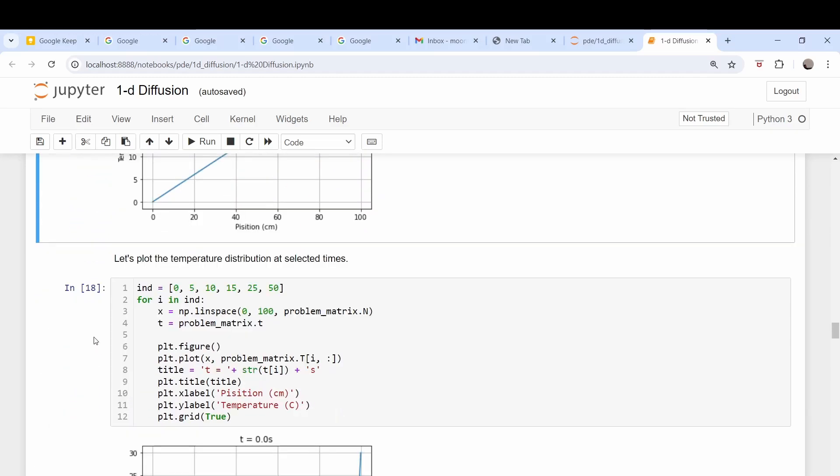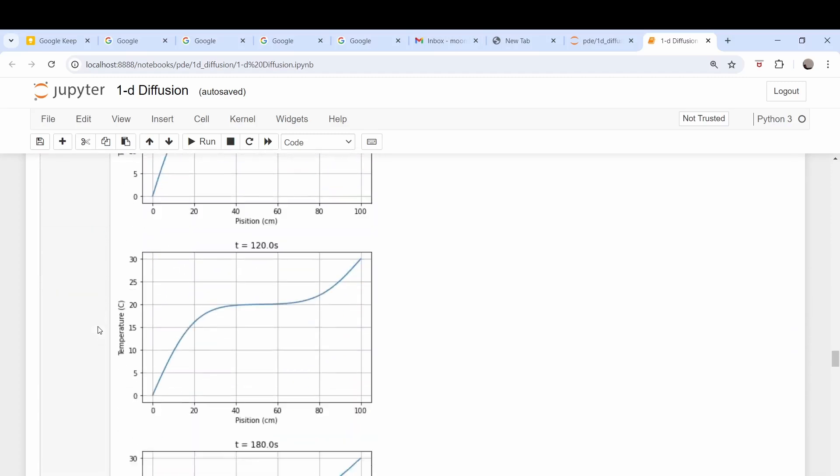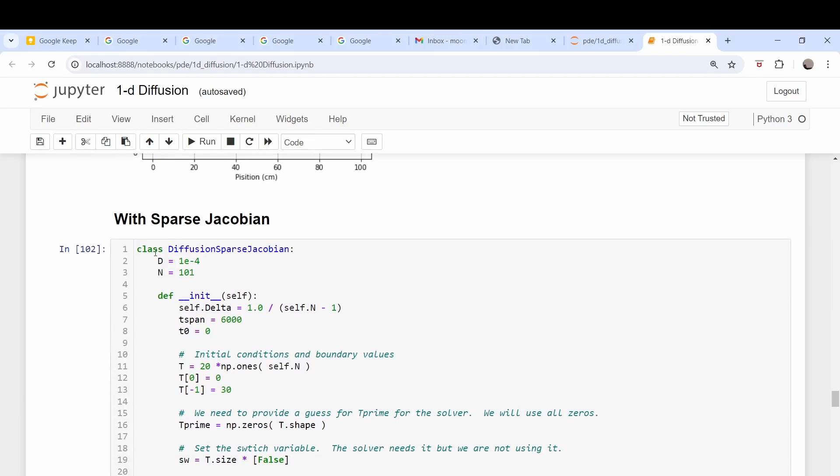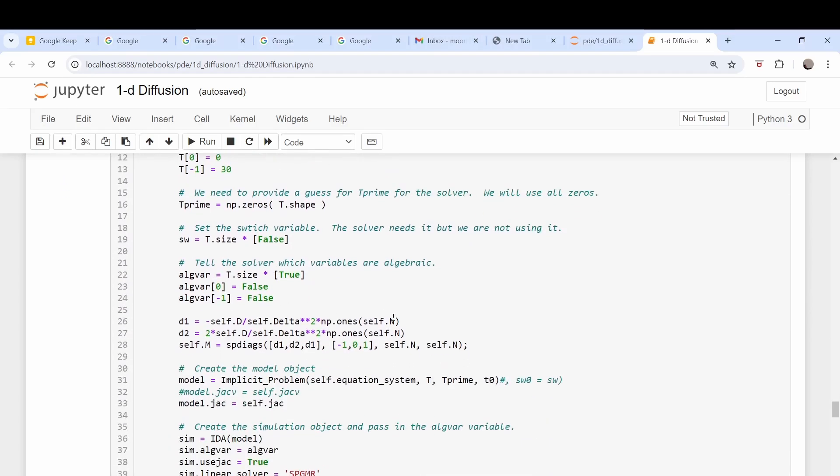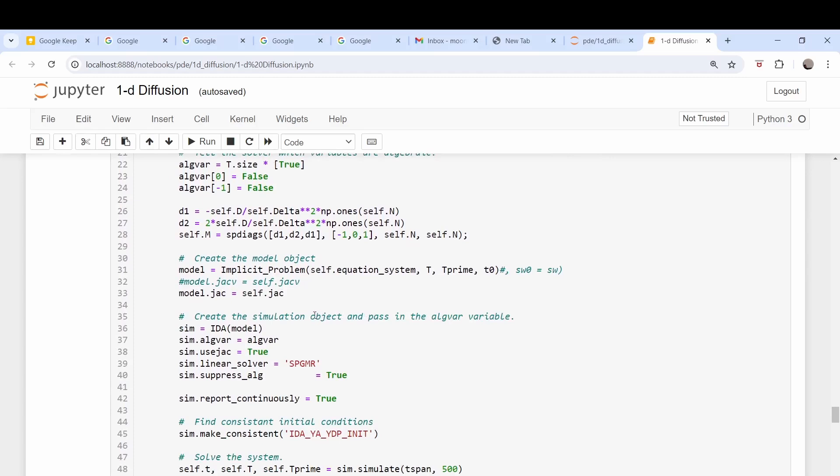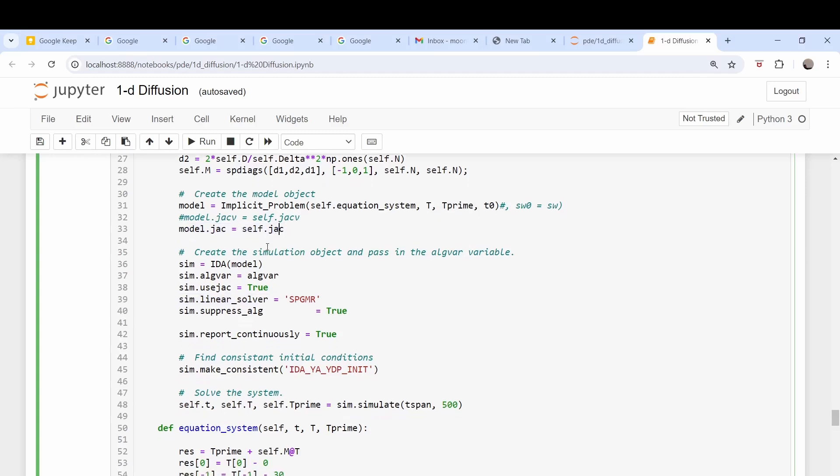So I had said that Assimilo cannot handle sparse Jacobian matrices, and that is not exactly correct. So down here with sparse Jacobian, I've basically rewritten the system here, and the key to this is setting the linear solver to a sparse matrix solver here, and then setting our Jacobian function here to self.jac.